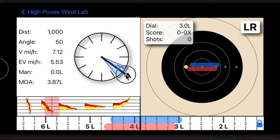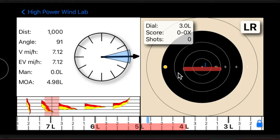If the condition is steady and you prefer to hold closer to center, you can adjust the dialed correction manually. To do so, first unlock the scale, then drag the scale so that the holdover is in a place that works for you.